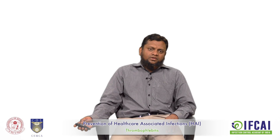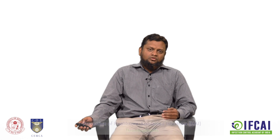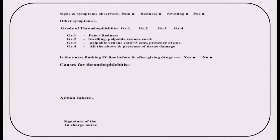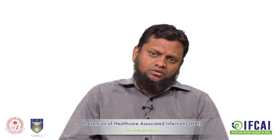The continuation of the form covers symptoms and grades of thrombophlebitis: Grade 1 — pain only; Grade 2 — pain and swelling; Grade 3 — the cord becomes palpable and thick; Grade 4 — all symptoms present and the patient may show signs of sepsis. This must be properly documented, and you must determine whether you are dealing with an infectious or non-infectious cause of phlebitis.